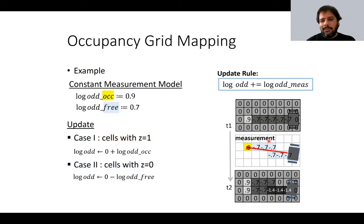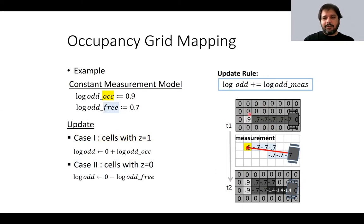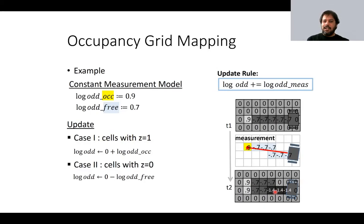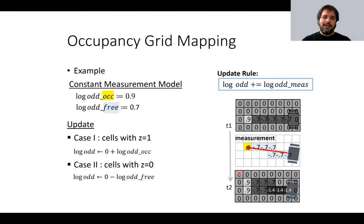Continuing to time t1 to t2: the robot turns slightly, reports another occupied cell, and the output of the previous step becomes the prior for the next step. For overlapping free cells close to the robot, the values become even more negative — more confidence that these cells are free. Cells with no measurements yet remain at log-odds zero, equally likely to be occupied or free.